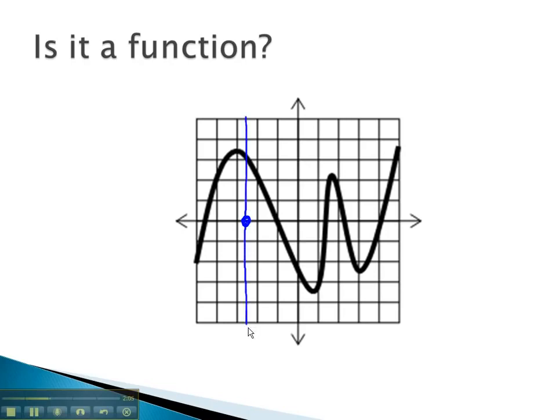By drawing a vertical line, we can see the graph crosses exactly once. No matter where we draw this vertical line to test an x value, there is only one y value that corresponds with any x value on the graph.